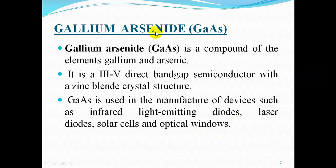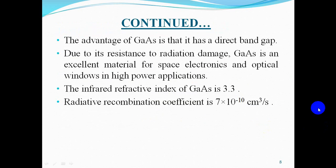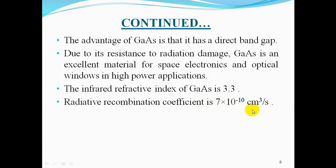Gallium Arsenide (GaAs) is a compound of the elements gallium and arsenic. It is a 3-5 direct bandgap semiconductor with a zinc blend crystal structure. Gallium arsenide is used in the manufacture of devices such as infrared light emitting diodes, laser diodes, solar cells, and optical windows. Its main advantage is its direct bandgap, which means it can absorb and emit light efficiently. Due to its resistance to radiation damage, it is excellent for space electronics and high power applications. The refractive index is 3.3 and the radiative recombination coefficient is 7×10⁻¹⁰ cm³/s.